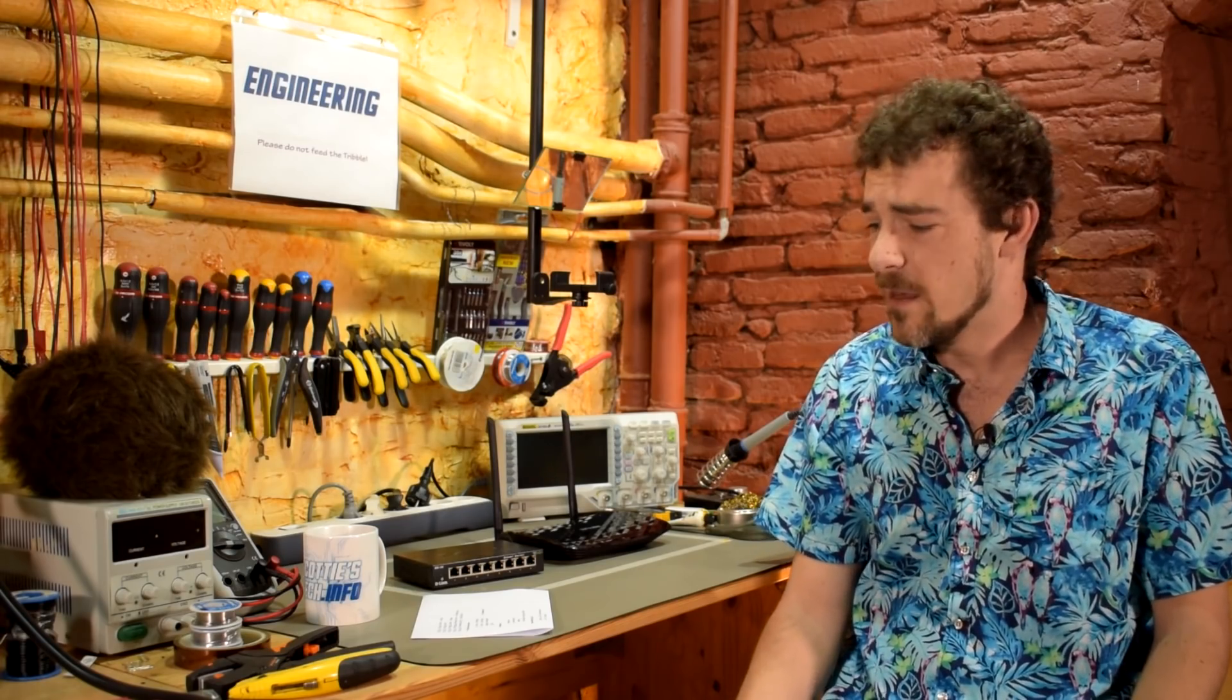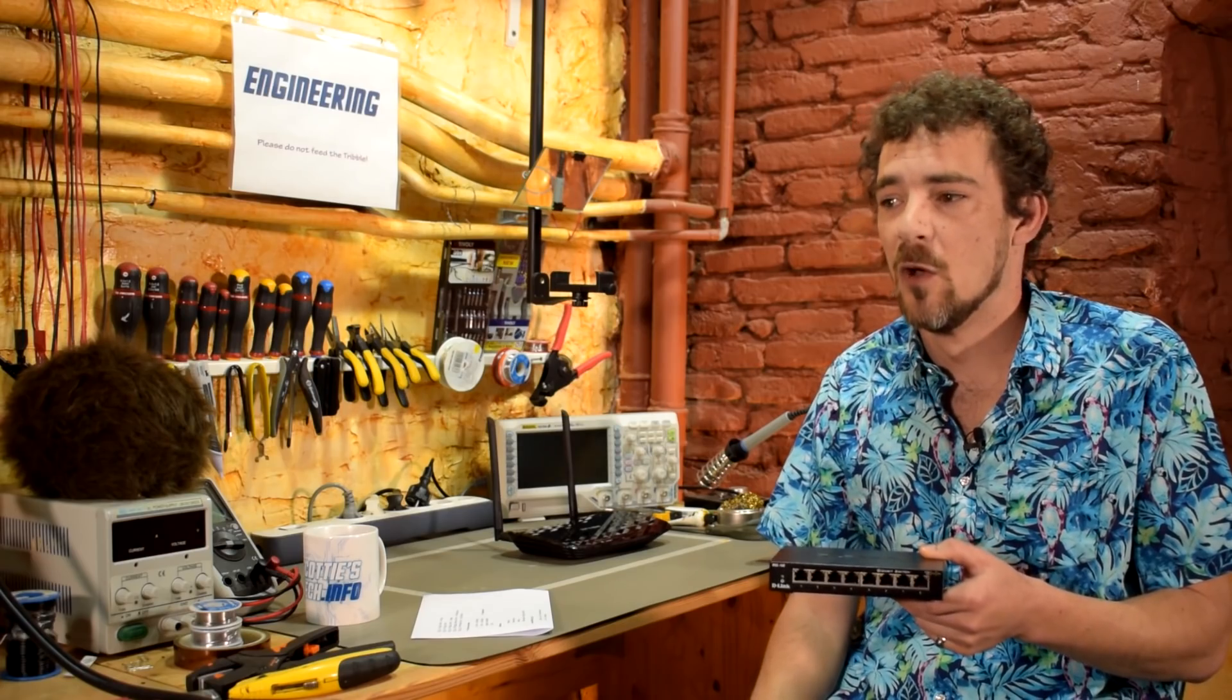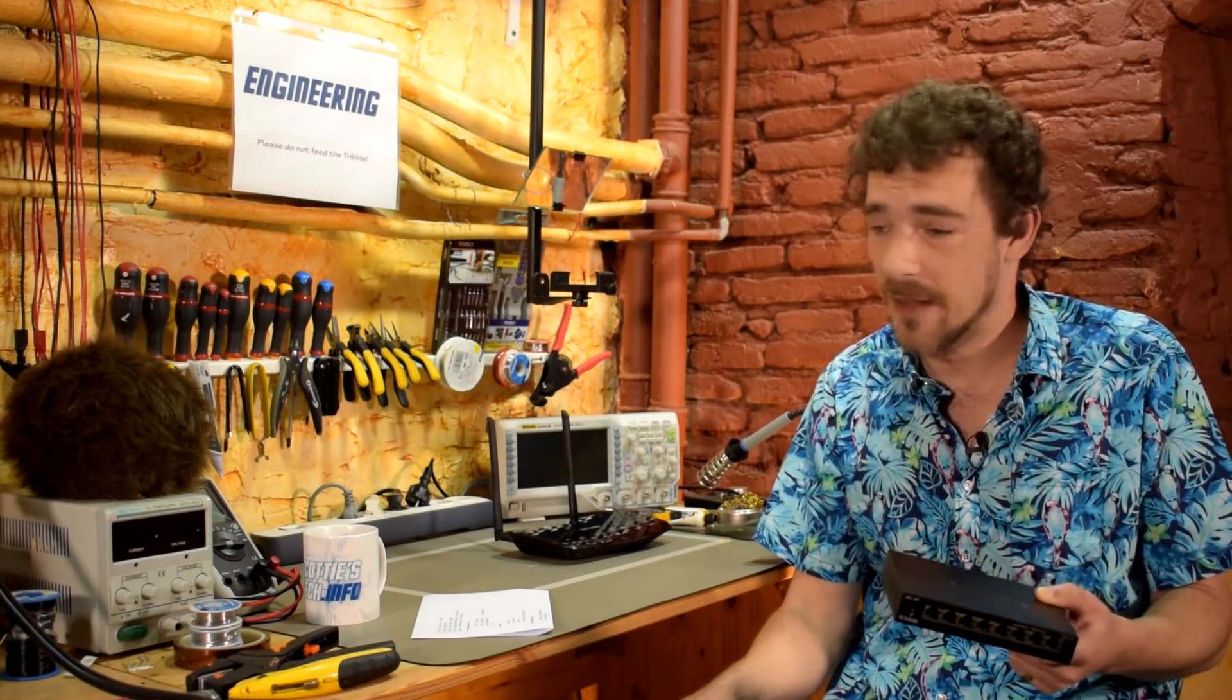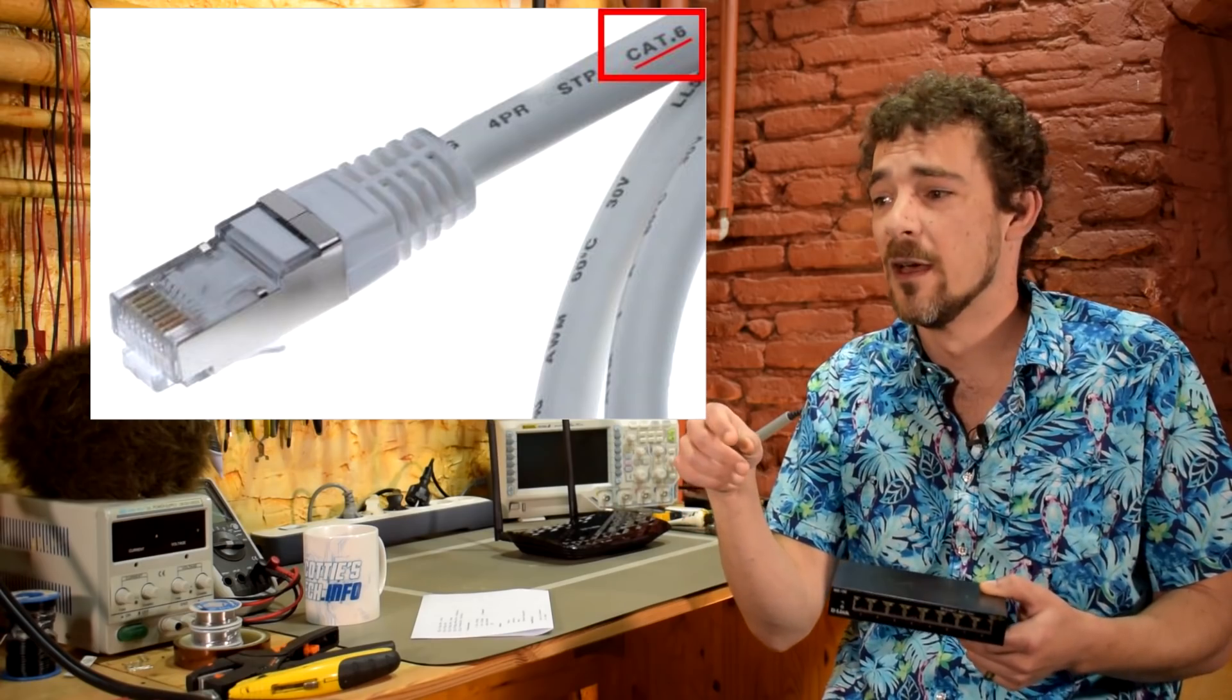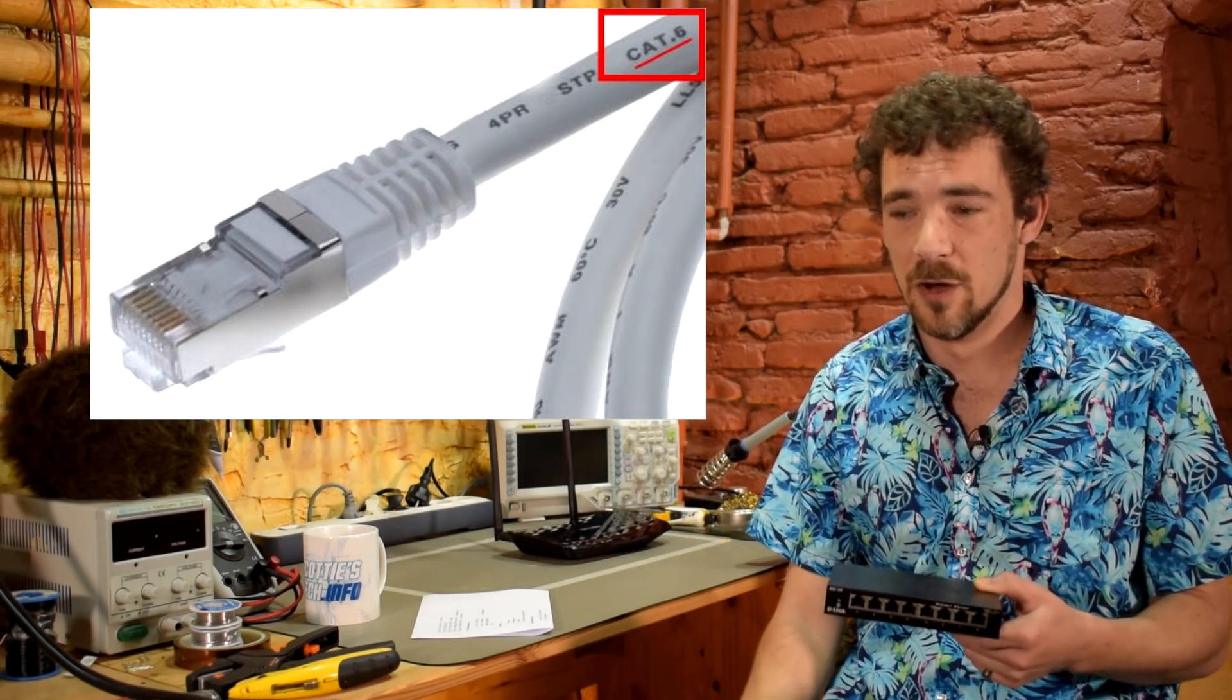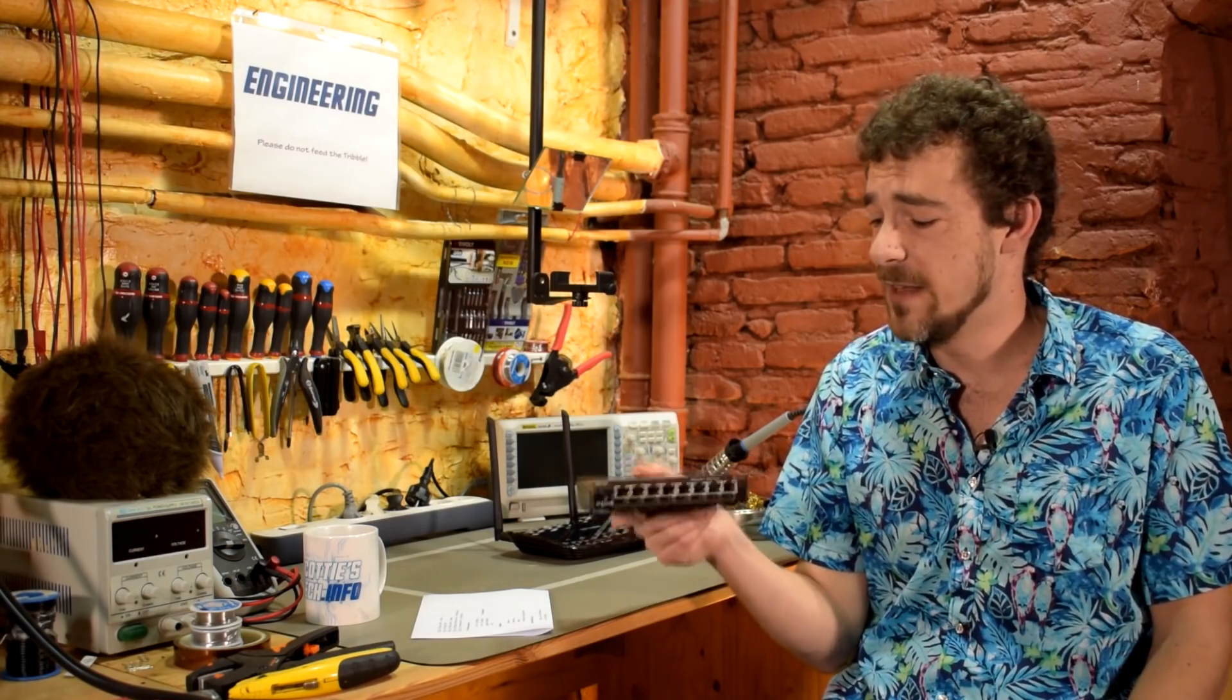The other thing to keep in mind is that if you decide to go the gigabit ethernet route, it's very simple. First of all, you need to buy a bunch of category 6 ethernet cables. You'll know it's cat 6 because it'll say right on there. I'll put some links in the description. It'll actually be printed on the side of the cable. Category 6 cable is certified to run at least gigabit ethernet speeds, and that's what you want.